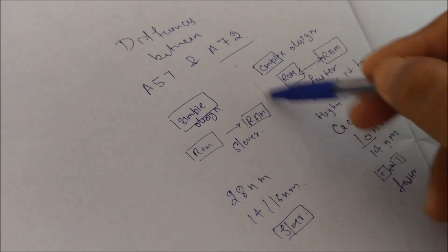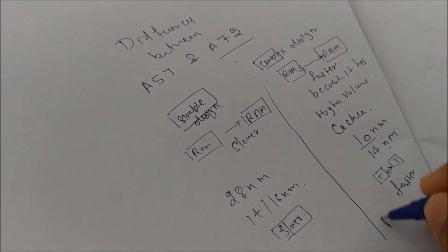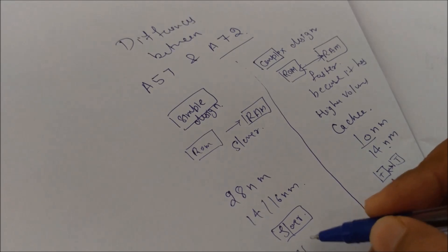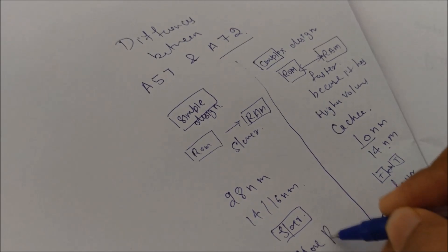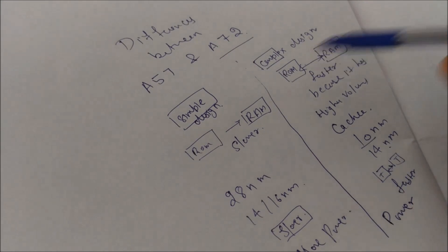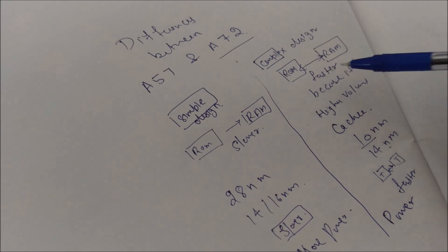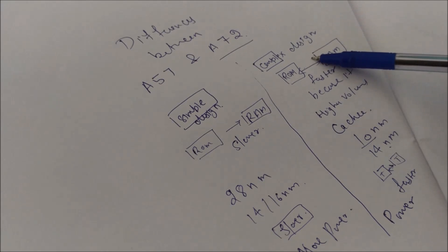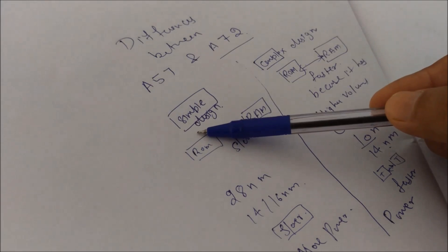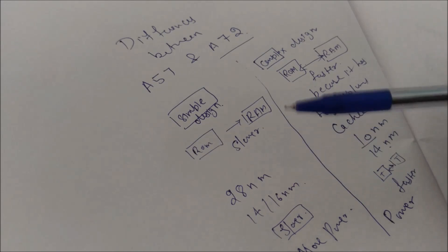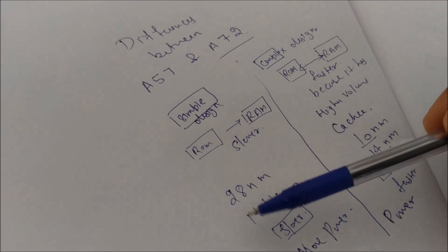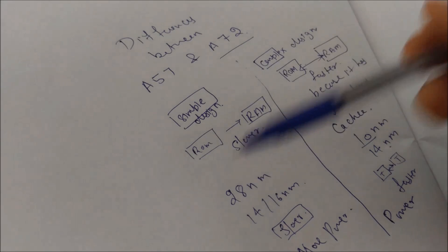So overall this will have more power, and this will be more power efficient. As data transfers will be more and it has to do more things, it will consume more power but it will give you high performance. And A57 will give you a little less performance but it will give you more power efficiency. The battery will last longer.